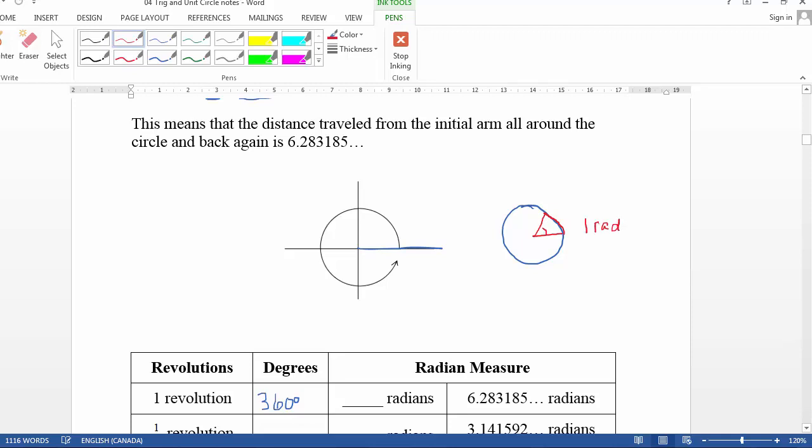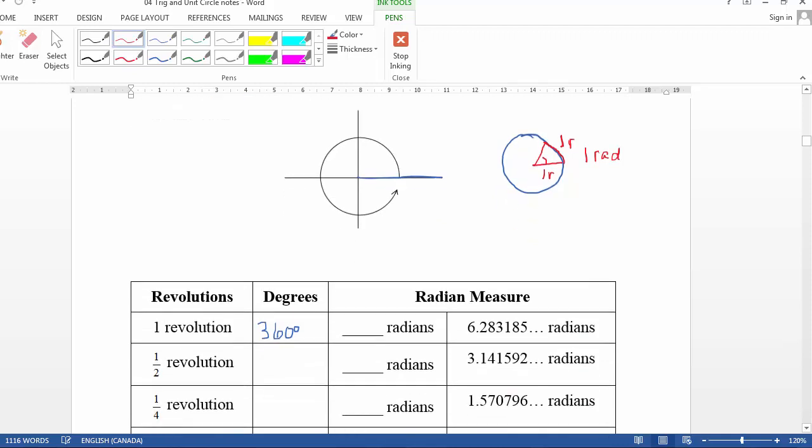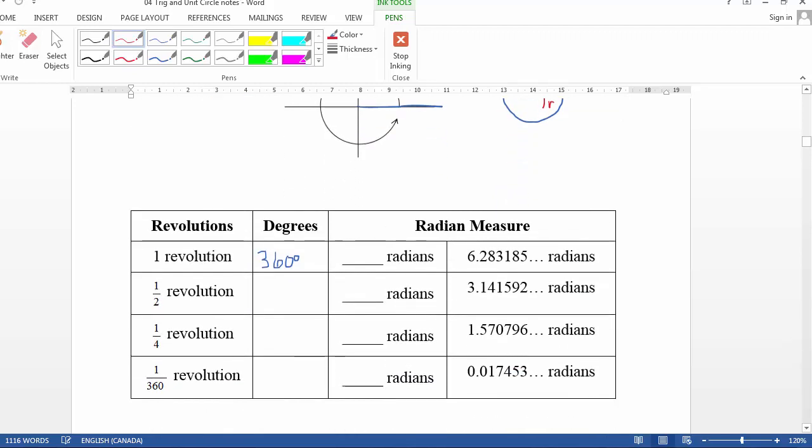So what we do is kind of neat if we say that this is 1r, and it subtends an arc, or this arc is the same length, 1r, but it's a curved line, right, so the licorice has to get curved. That angle in there is one radian, and one radian, we can see over here, we can translate between degrees and radians.